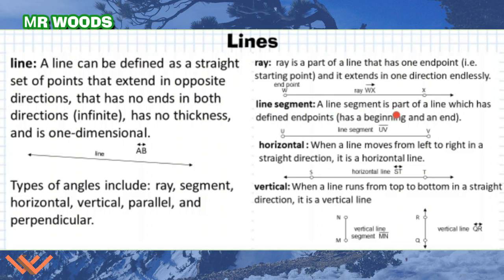Line segment. A line segment is part of a line which has defined endpoints. So I could have this as part of a whole long line that goes infinite directions. But when I say, hey, here's this line segment U, V, and I have this notation here where it's just a straight line with no arrows on it. Above it, that's just that line segment. It does not continue in either direction.